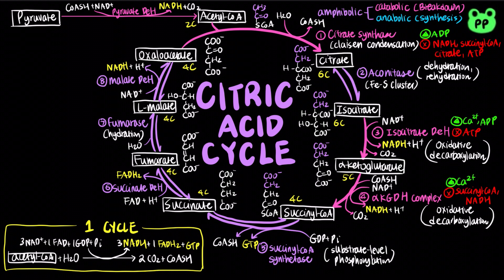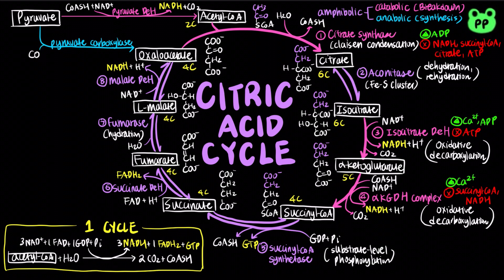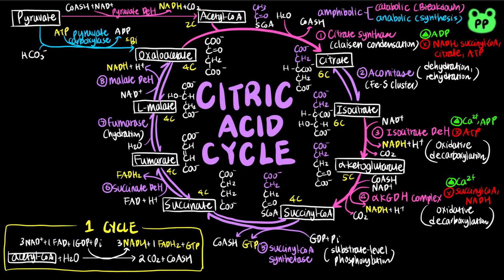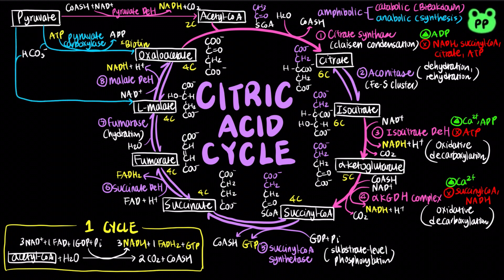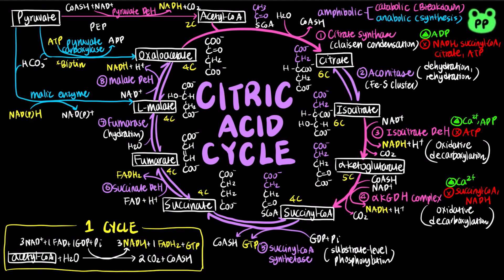As mentioned earlier, intermediates of the citric acid cycle often serve as precursors to the biosynthesis of amino acids. Therefore, intermediates of the citric acid cycle are replenished by anaplerotic reactions. There are three common anaplerotic reactions. Pyruvate carboxylase catalyzes the irreversible carboxylation of pyruvate to form oxaloacetate, coupled to the hydrolysis of an ATP molecule and requiring the coenzyme biotin. Pyruvate can also undergo carboxylation and reduction to form L-malate, coupled to the oxidation of NADPH or NADH to NADP+ or NAD+. The third anaplerotic reaction involves the dephosphorylation and decarboxylation of phosphoenolpyruvate to replenish oxaloacetate, with the phosphoryl group transferred to a GTP molecule.